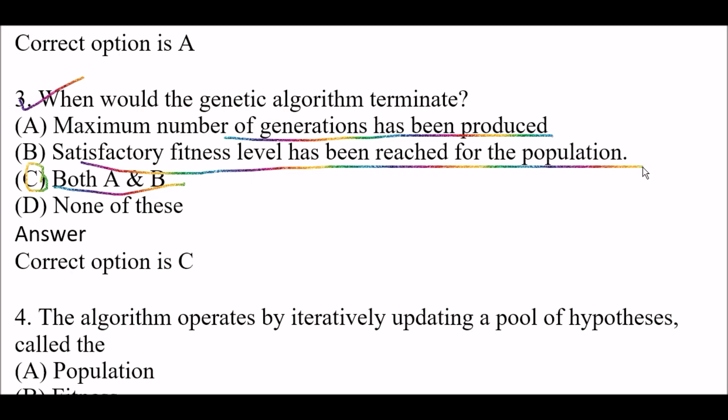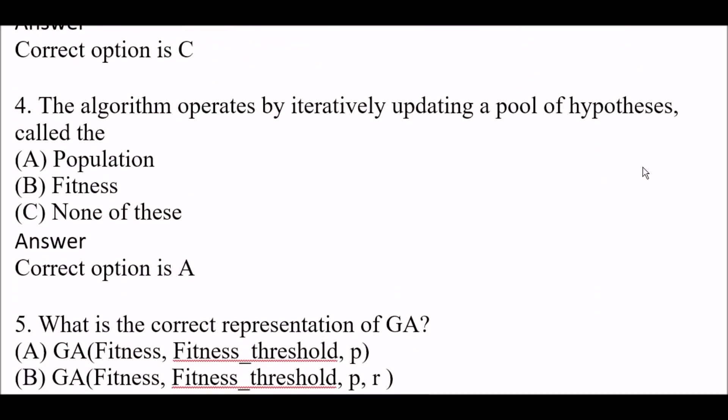Next question: The algorithm operates by iteratively updating a pool of hypothesis called the — Option A: Population. Option B: Fitness. Option C: None of these. Right answer is Option A — Population. The algorithm operates by iteratively updating a pool of hypothesis called the Population.